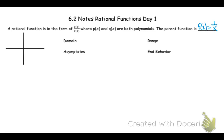The rational parent function looks something like this. What was different about this graph is it had something called asymptotes — a vertical asymptote and a horizontal asymptote. An asymptote is basically what your graph is getting very, very close to without actually touching. For example, this graph keeps going higher and higher, but it doesn't actually touch that value. That's an x value of 0; if I plug that in, I'd have 1 divided by 0, which can't happen.